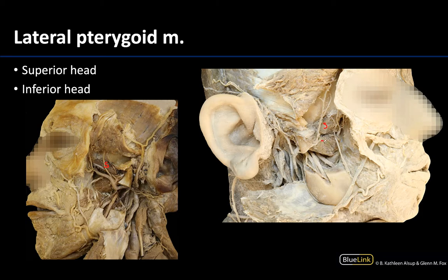The inferior head's proximal attachment is also on the sphenoid bone — specifically on the lateral aspect of the lateral pterygoid plate. Its distal attachment is on the pterygoid fovea of the mandible, located in the neck region of the condylar process. The lateral pterygoid is often closely associated with the second part of the maxillary artery, which occasionally passes deep to the inferior head, as seen in this particular donor.